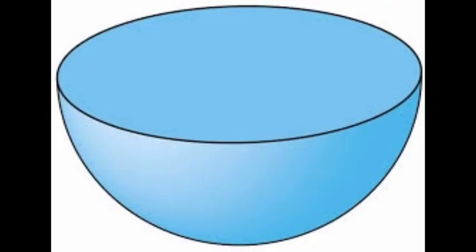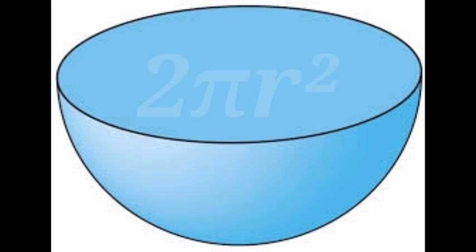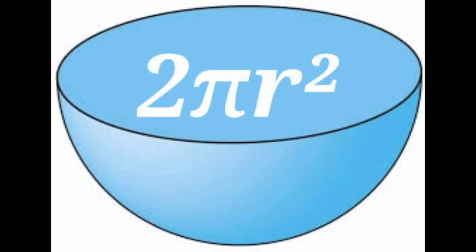Can you tell what is this? It is a hemisphere. A hemisphere is an exact half of a sphere. The total surface area of a hemisphere is 3πr², and the curved surface area of a hemisphere is 2πr².